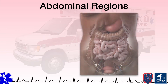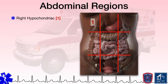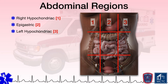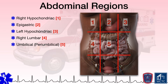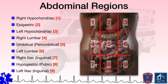To go a step further, the abdomen can be broken down even more into nine regions as follows: right hypochondriac, epigastric, left hypochondriac, right lumbar, umbilical or peri-umbilical depending upon the resource you are referencing, left lumbar, right iliac, hypogastric, and left iliac.